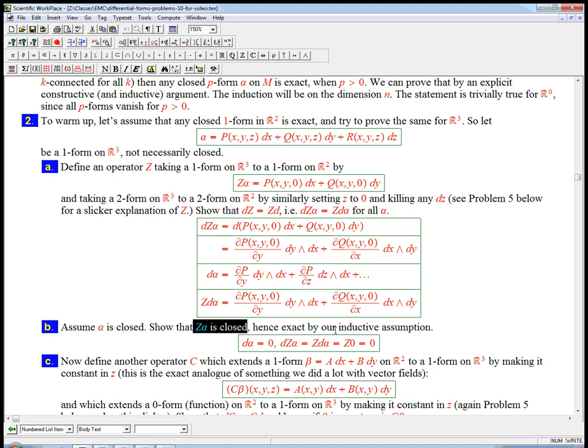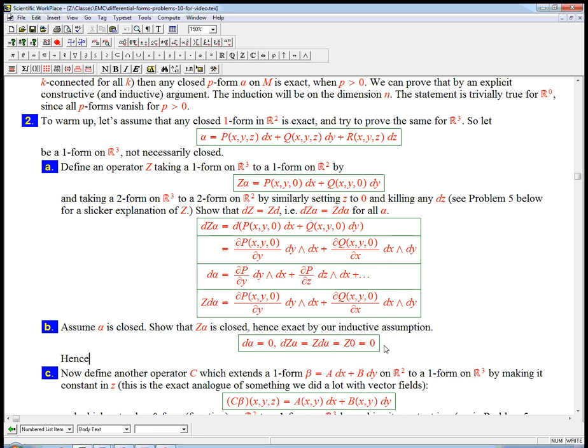Now, here's the big deal. Remember, we're assuming that somebody already showed the big statement that we want to prove for one forms in R2. So, we've shown that Z alpha is closed, and then hence, by induction, or inductive assumption, induction hypothesis if you will, Z alpha is also exact. That's great. So, that might seem a little bit underwhelming, because we certainly are a long way from proving that alpha is exact. Z alpha is a highly truncated version of alpha, but at least we've got something to start with. We've got something being exact.